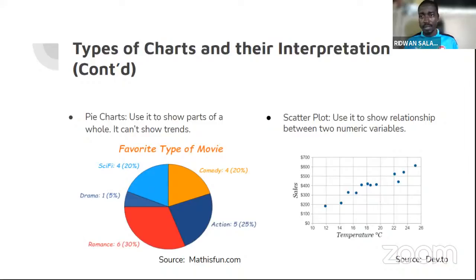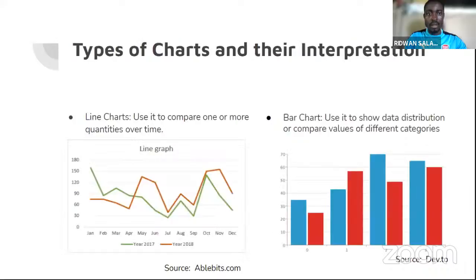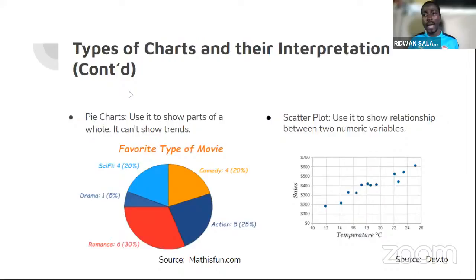Next we have pie charts. Use pie charts to show parts of a whole. We've been seeing pie charts throughout our school days. A simple example used to illustrate pie charts in school is an orange sliced into halves.